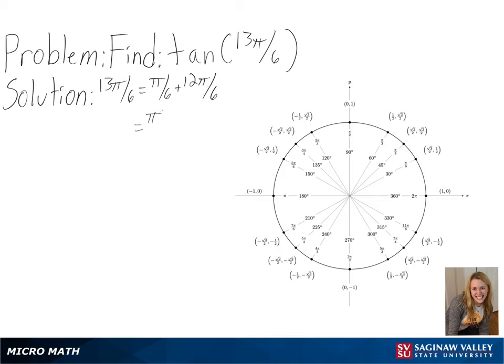So starting at (1, 0) and moving counterclockwise, we will go one full revolution around our circle for our 2π, and then continue for another π over 6.